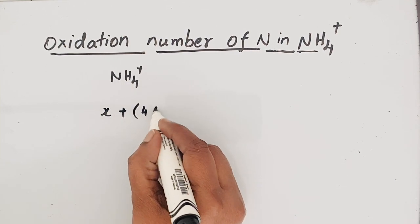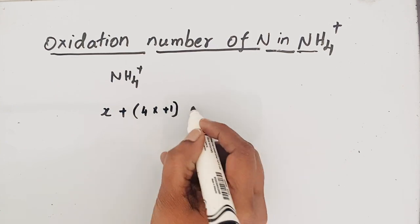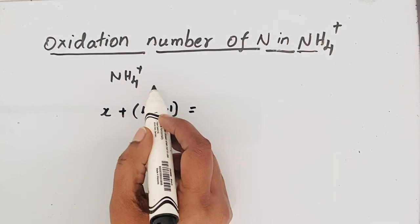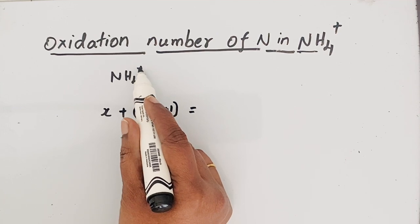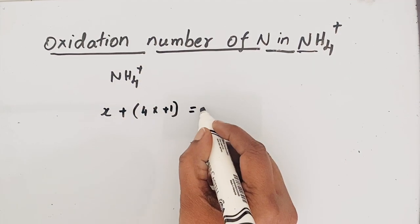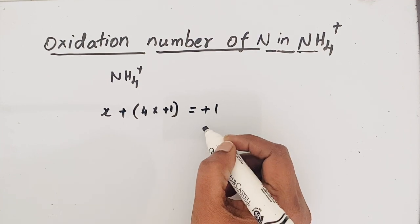So 4 times +1, the sum must be 0 if it is a neutral molecule. But this is a polyatomic ion. Since it carries +1 charge, the sum must be equal to +1.